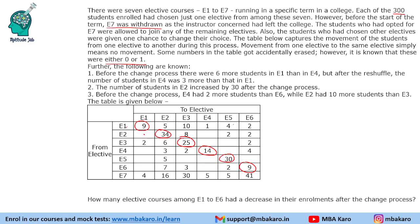We have 300 students shifted from 7 to 6 courses, and we are given some additional facts. Before the change process, there were 6 more students in E1 than in E4. Let us first add the rows and columns for which we have complete data: that gives us 14, 24, 31, 20, 50, 60, and 41 — totaling 101.